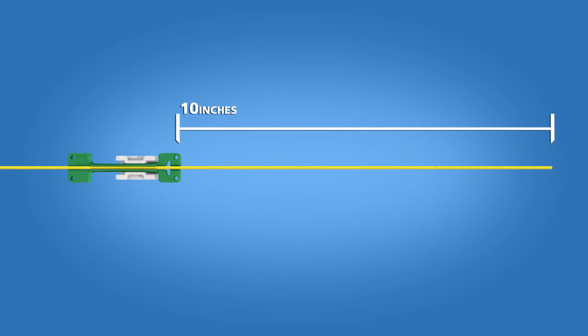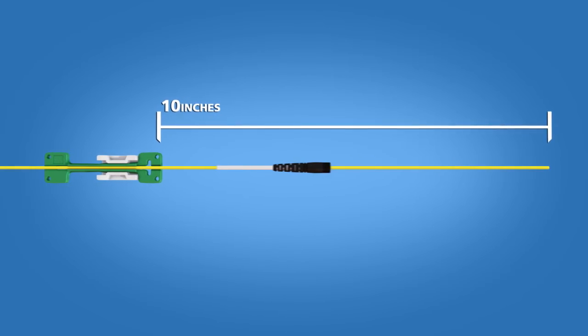For 2 and 3 mm terminations, begin by placing the appropriate cable clamp onto the cable about 10 inches from the end of the cable. Insert the appropriate boot onto the cable.